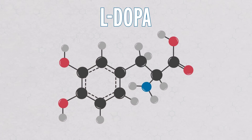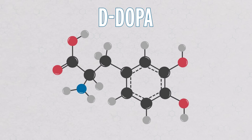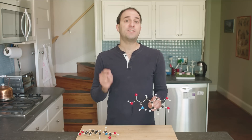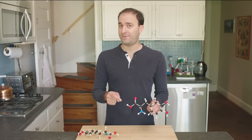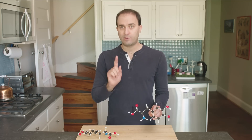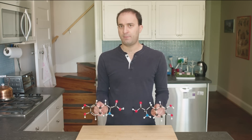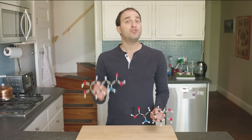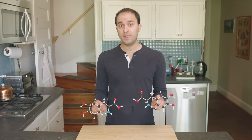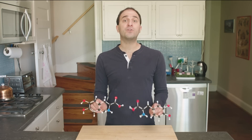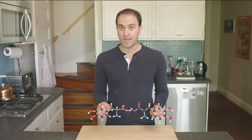This molecule is called L-DOPA, and it is the most effective treatment we have for Parkinson's disease. This molecule is called D-DOPA, and it does nothing for Parkinson's and causes a potentially deadly side effect called granulocytopenia. It turns out that it is really easy to set up a chemical reaction that will make both of these molecules at the same time. But making just L-DOPA without D-DOPA? That was so hard that the person who did it won the Nobel Prize.